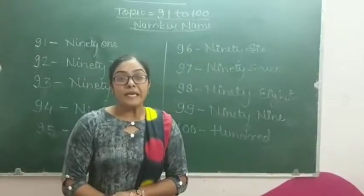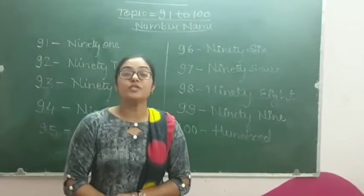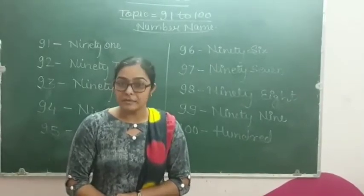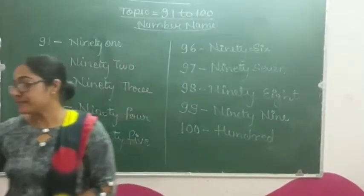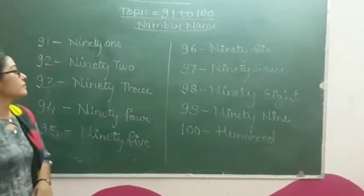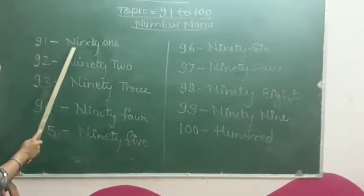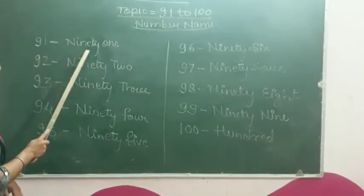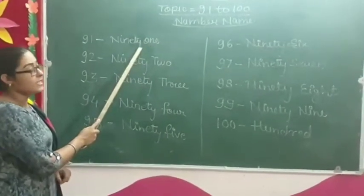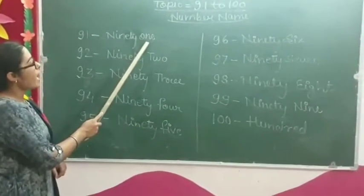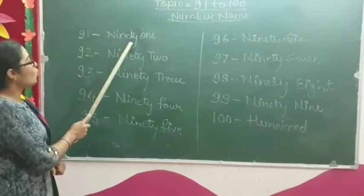Today's topic is 91–200 number names. Ninety-one. N-I-N-E-T-Y — 90 — O-N-E — 1. Ninety-one.